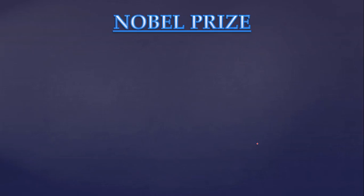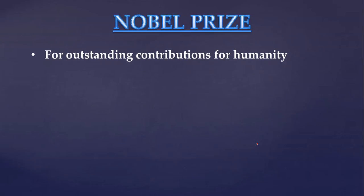Let's get started. What is Nobel Prize? Nobel Prize is a set of annual international awards, awarded in a number of categories for outstanding contribution to humanity, presented by Swedish and Norwegian institutions in recognition of economic, cultural and scientific advances. Each recipient receives a gold medal, diploma and a sum of money that has been decided by the Nobel Foundation.